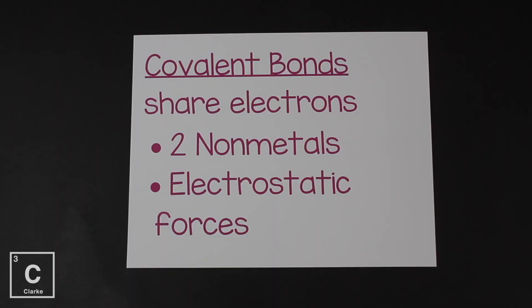Covalent bonds share electrons. Sharing is very nice, but sharing isn't so strong. Covalent bonds, not quite as strong as ionic bonds. Co means we're going to share.